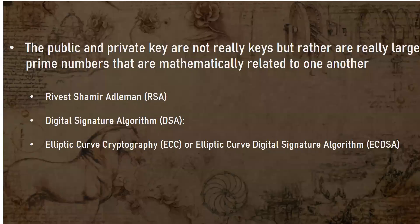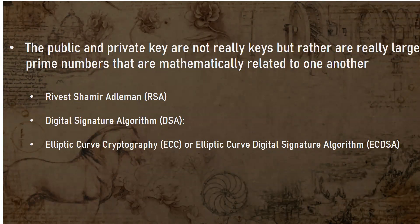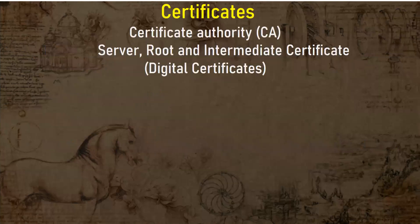Public and private keys are not real physical keys — rather, they are very large prime numbers that are mathematically related to one another. They are a certain kind of algorithm designed by security developers. You may have heard of RSA, DSA, ECC, and ECDSA — these are certain kinds of algorithms designed by security developers. These are code that takes plain text as input and encrypts that text into an unreadable form.